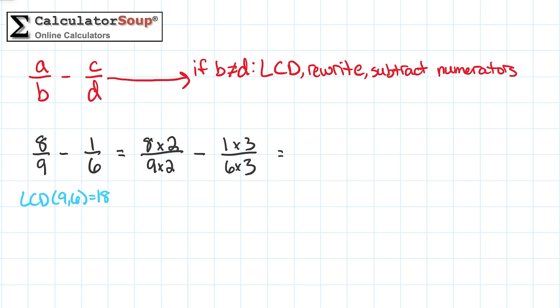8 times 2 is 16, and 9 times 2 is 18. 1 times 3 is 3, and 6 times 3 is 18, so our new equation is 16 eighteenths minus 3 eighteenths.